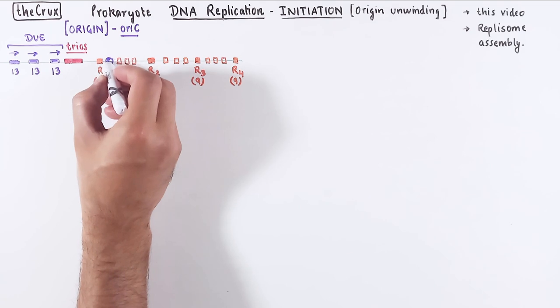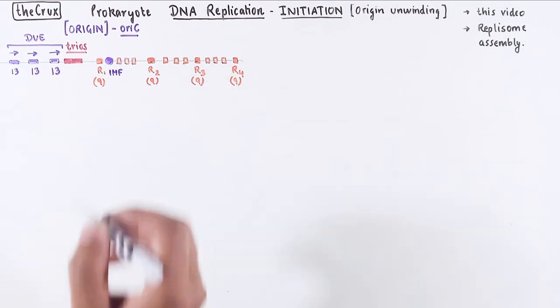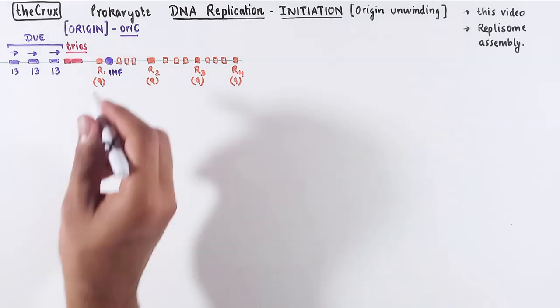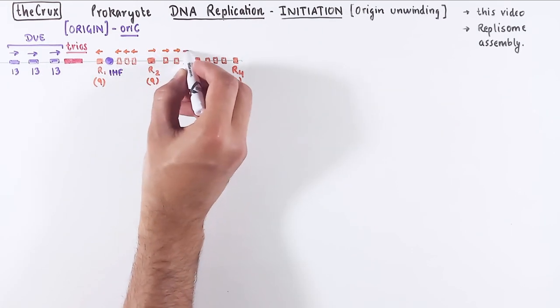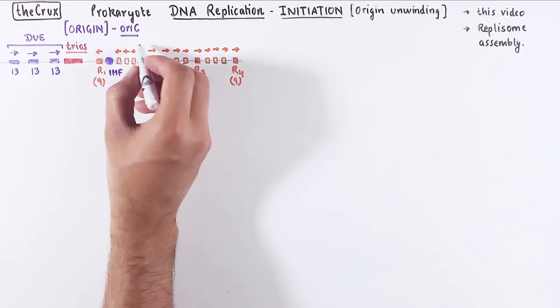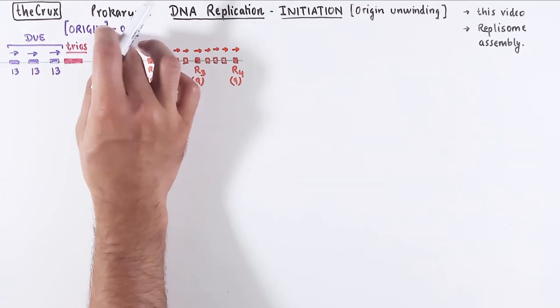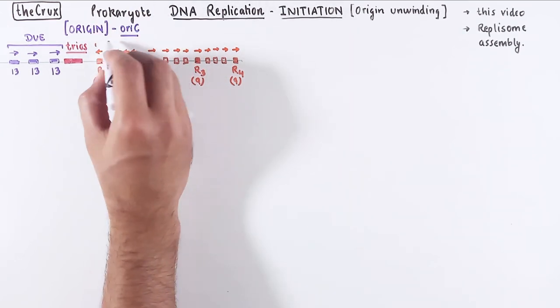In between these regions are other nine nucleotide long sequences, which differ slightly from these main regions 1, 2, 3, and 4. Next to the R1 is this sequence, which specifically recruits a protein called integration host factor protein. One last thing to note is that the regions on the left of R2 are directionally oriented towards the DUE region, and the regions from R2 until the R4 are all oriented away from the DUE region.